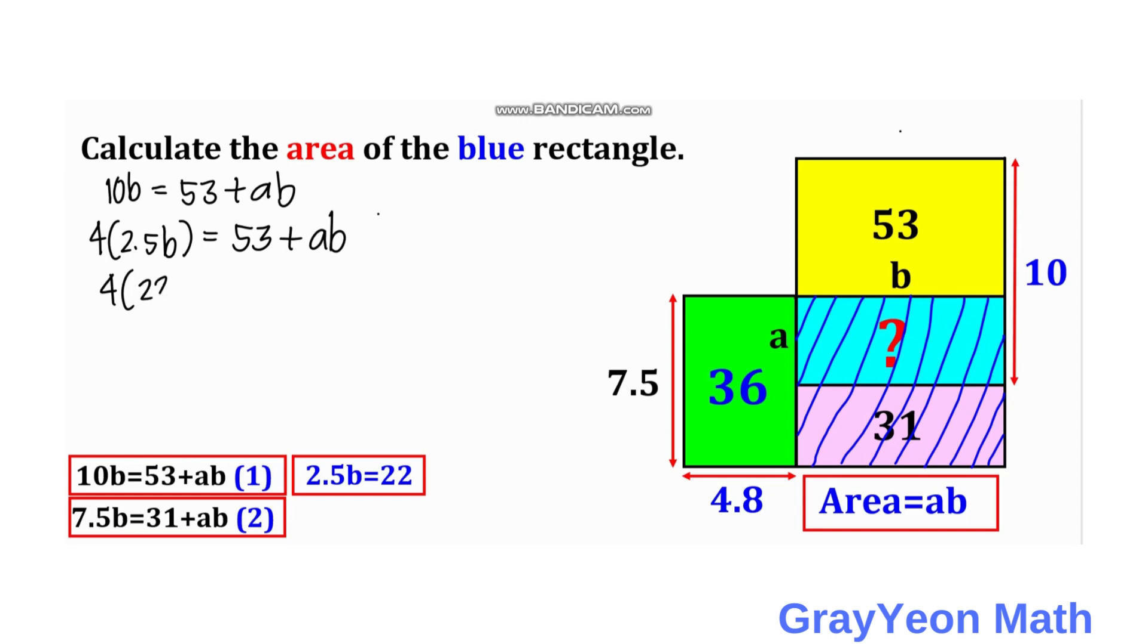So we can say that AB is actually equal to 4 times 22, which is 88 minus 53. And the value of AB would be equal to 35 square units. And that is our answer.